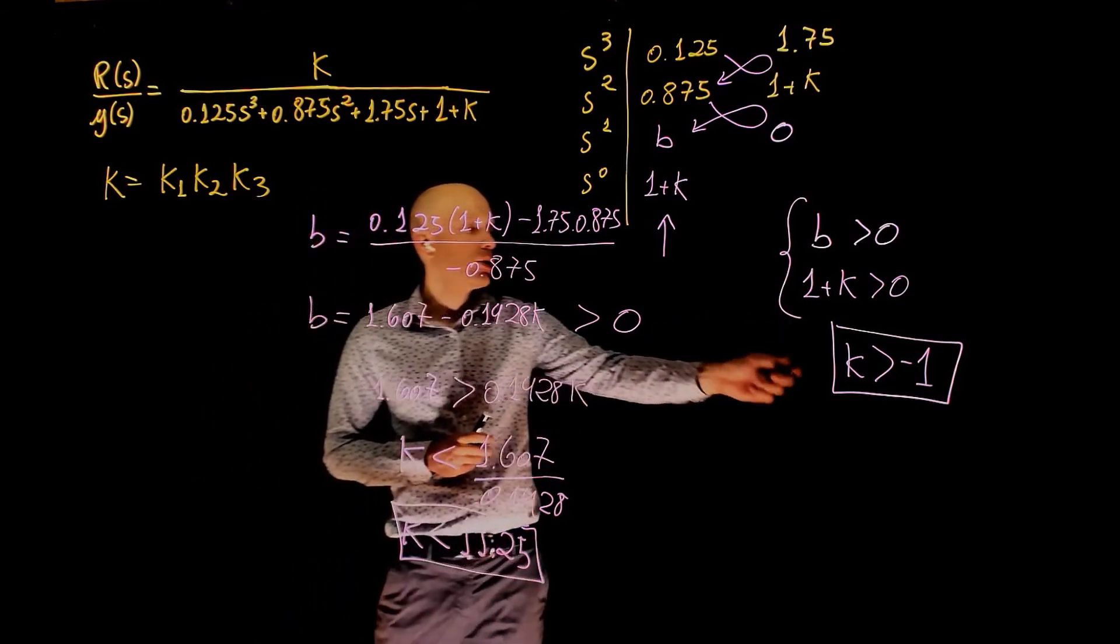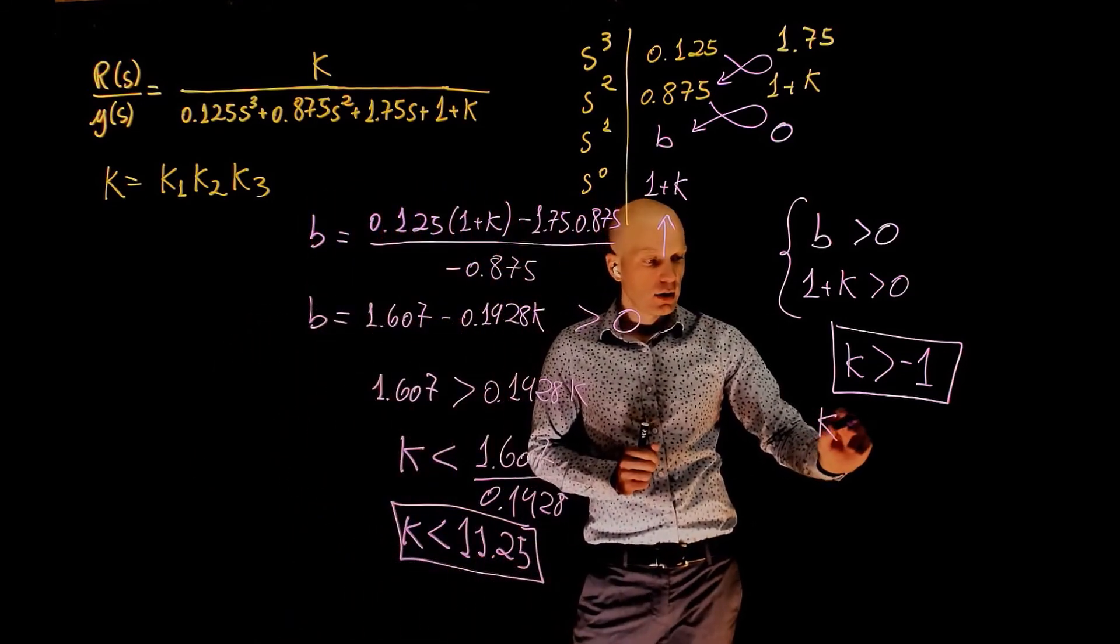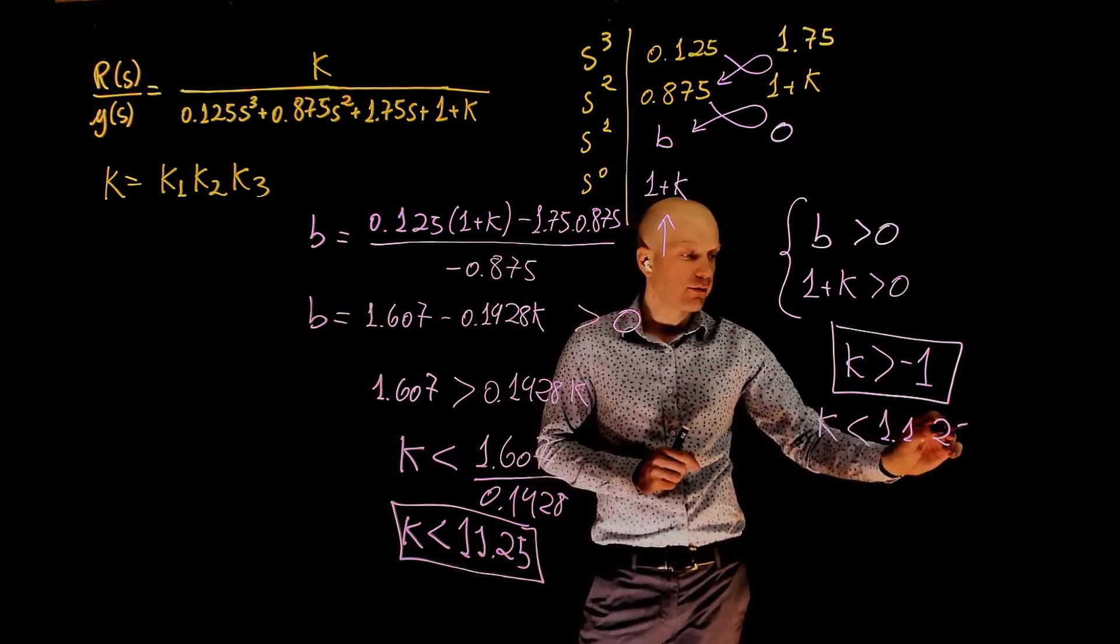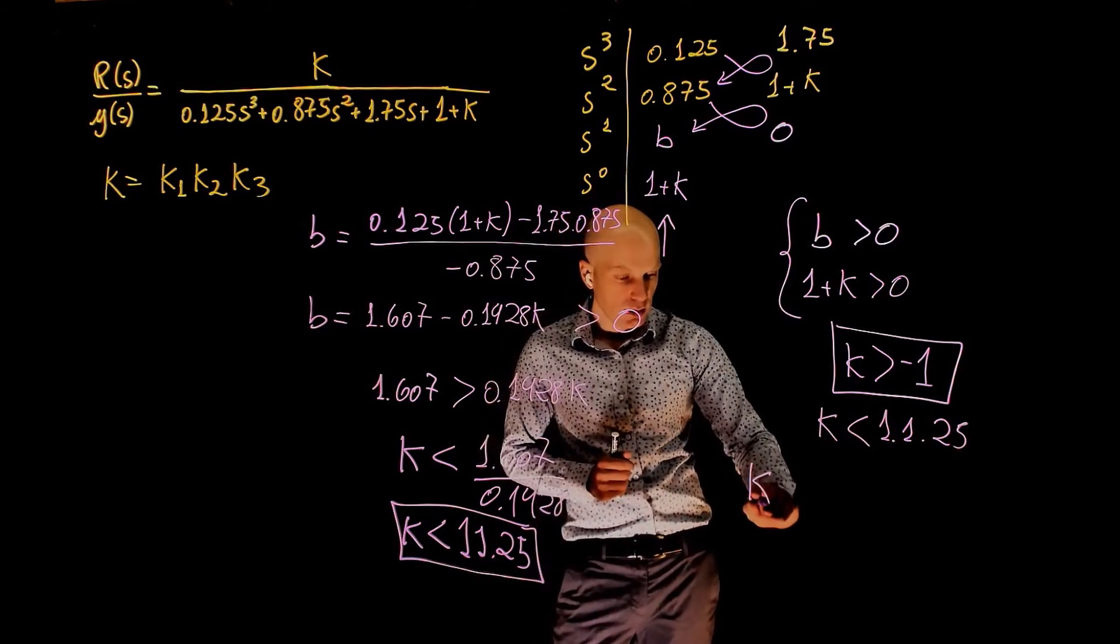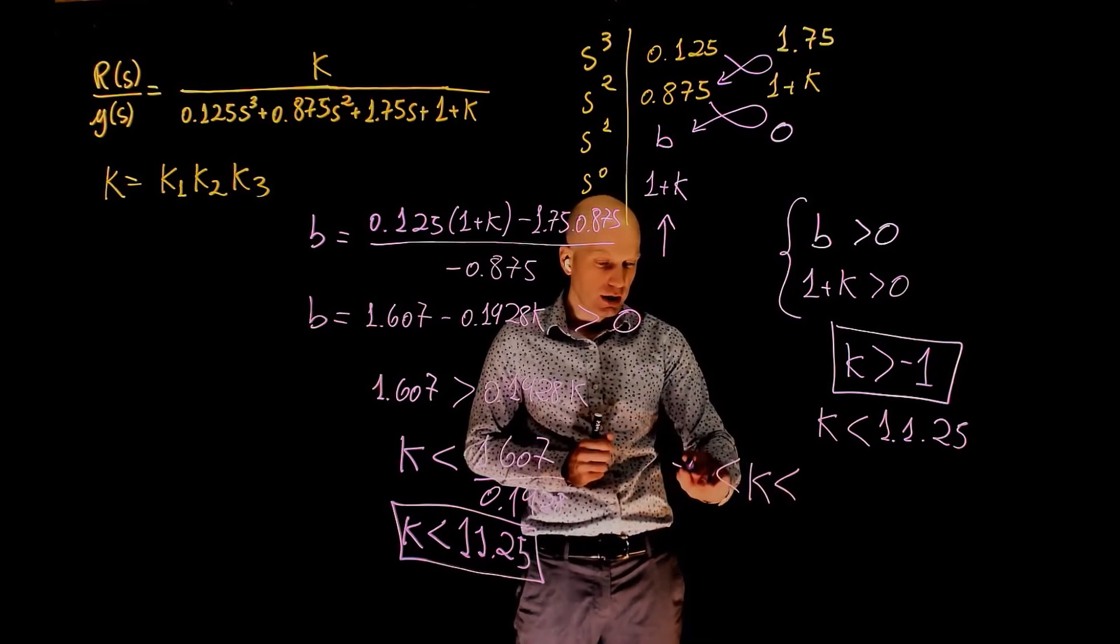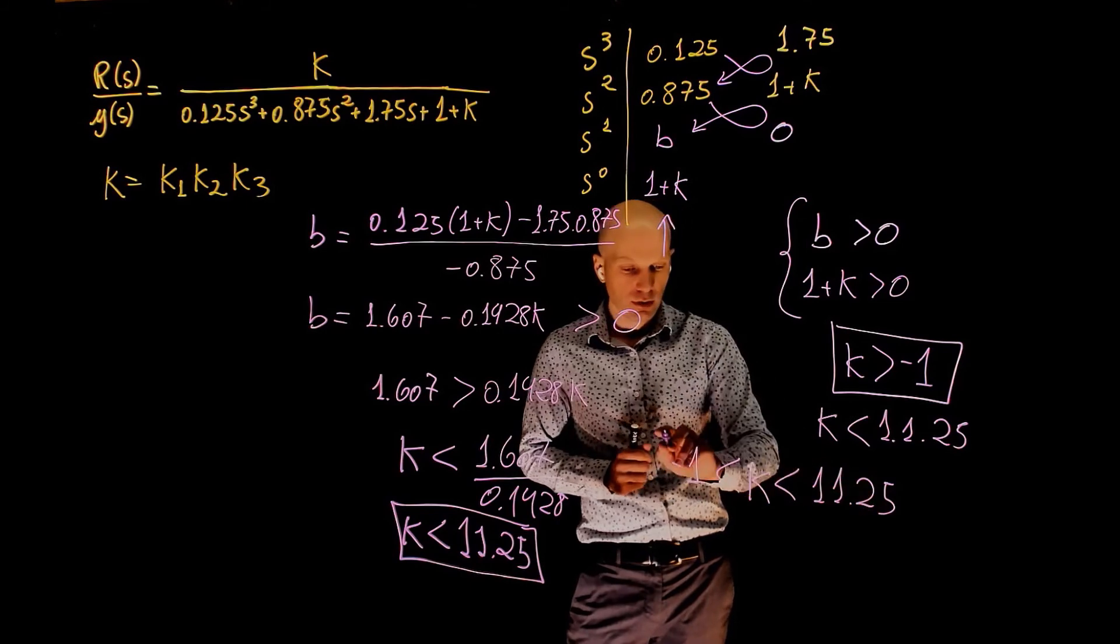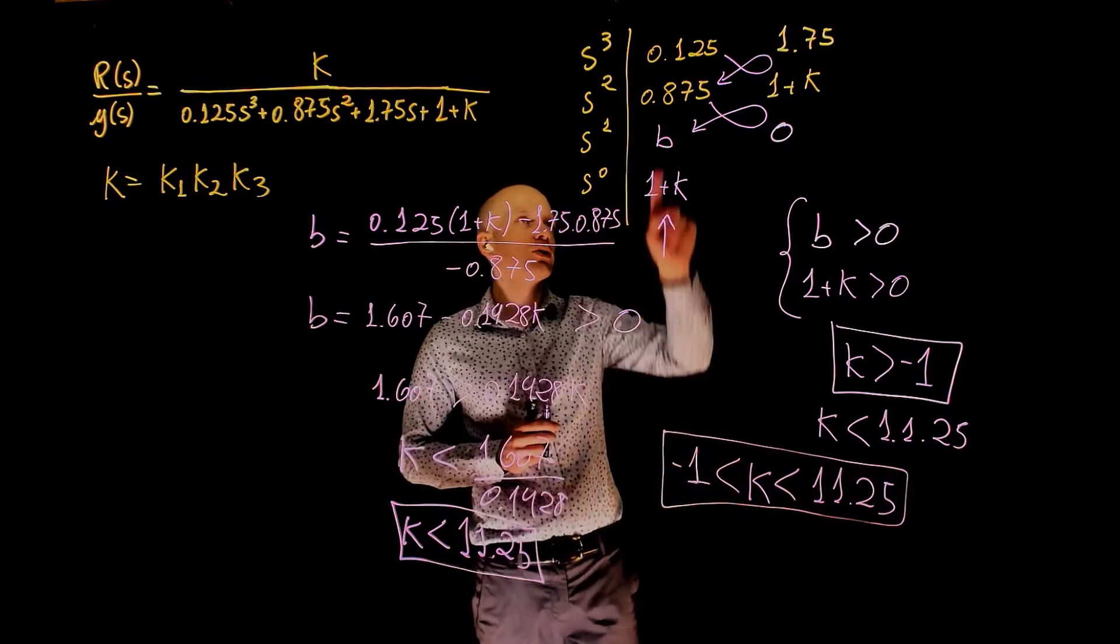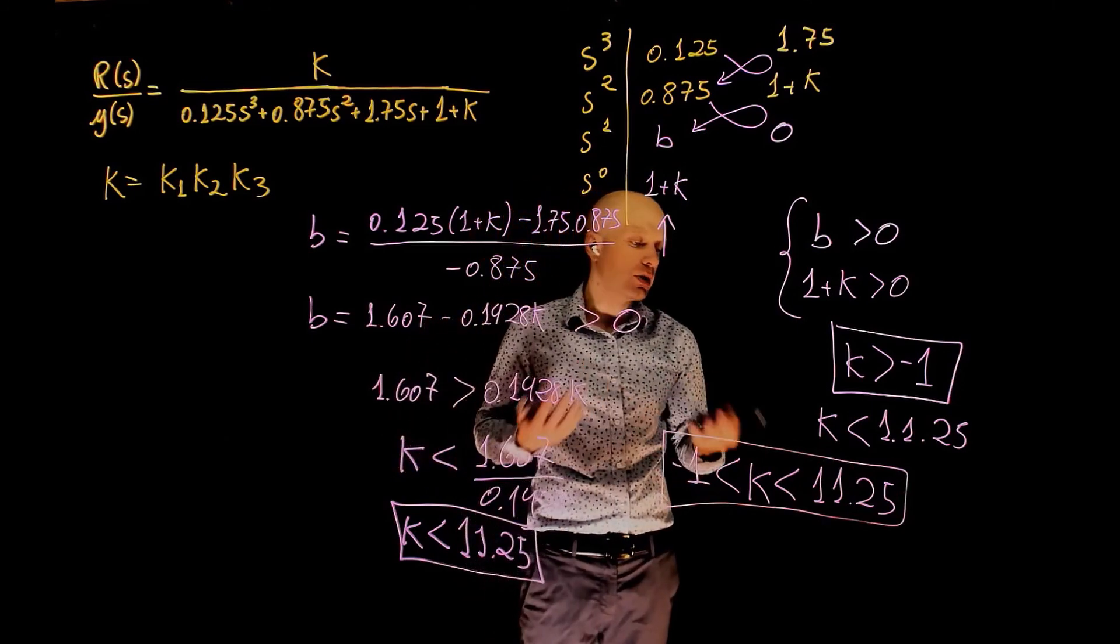So from this condition, we got k greater than negative 1. And from this condition, we got k smaller than 11.25. So the range of stability for this system is k comprised between negative 1 and 11.25. If we are within these bounds, then there is no sign change in the first column, and the system is closed loop stable.